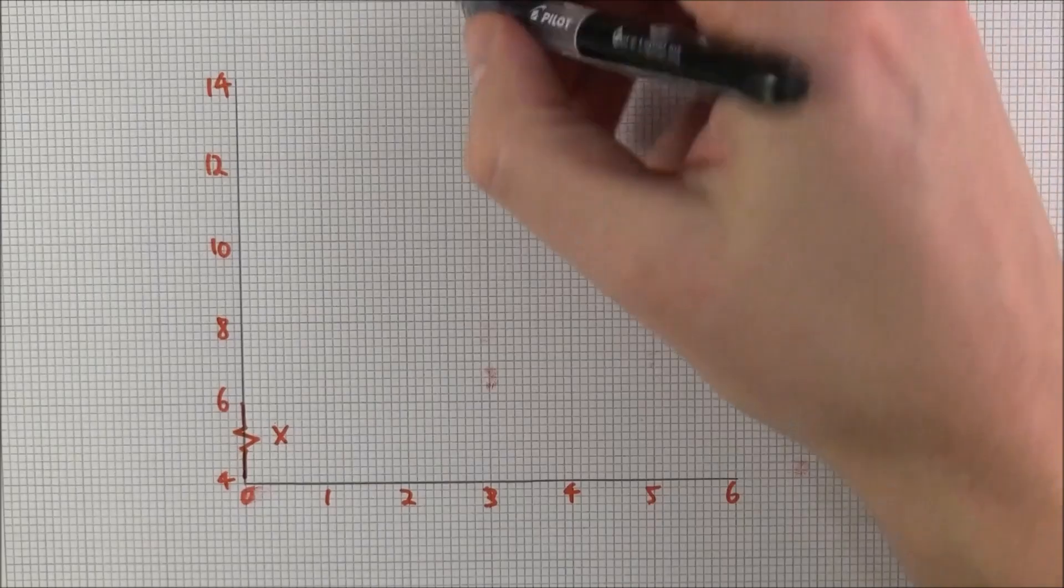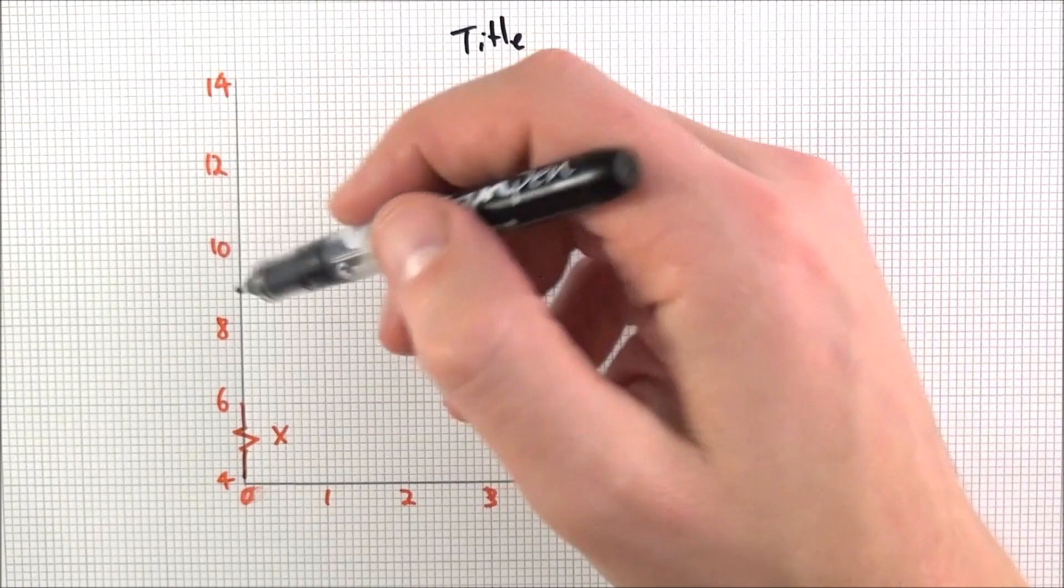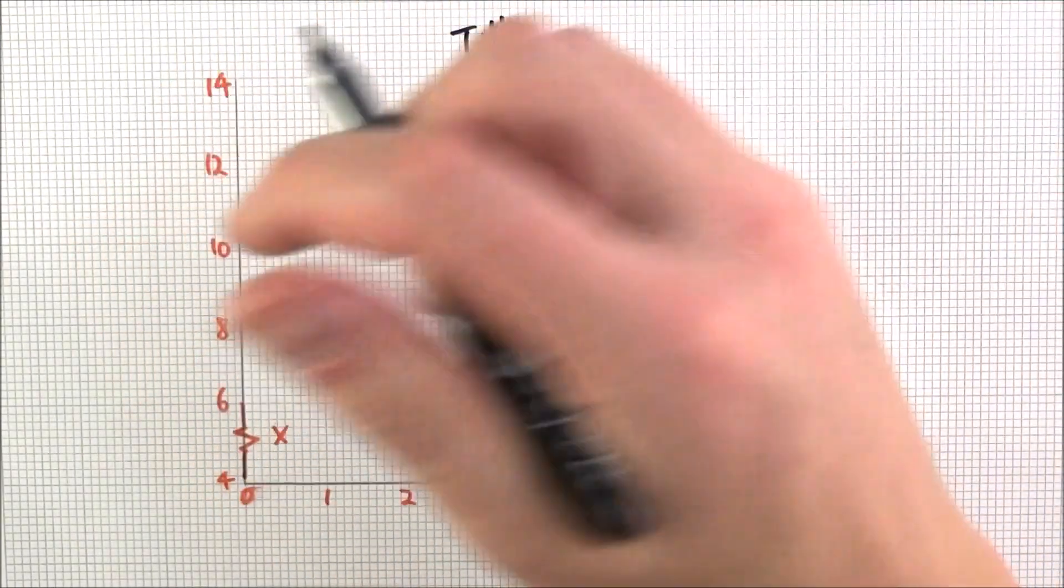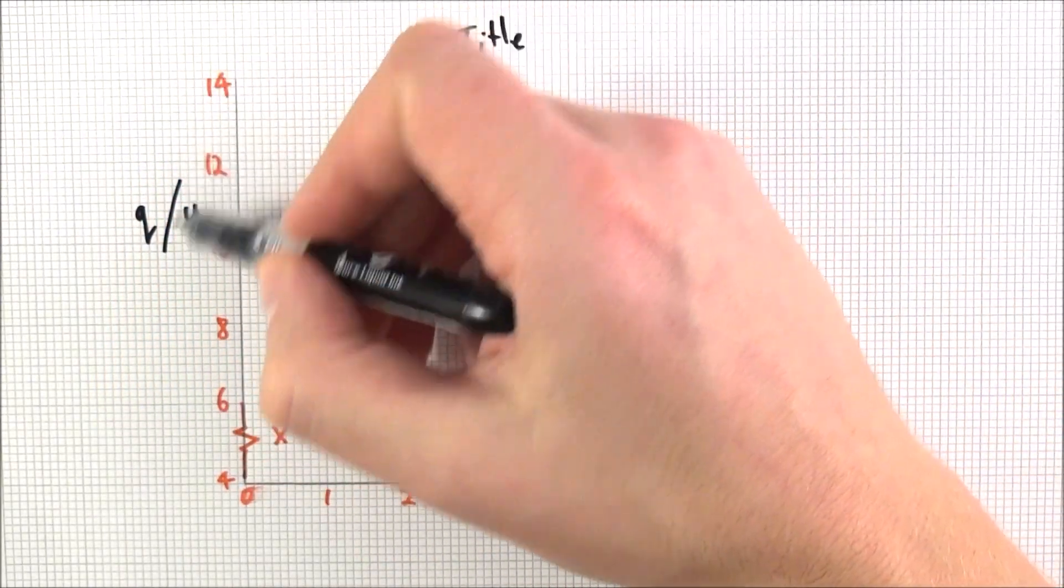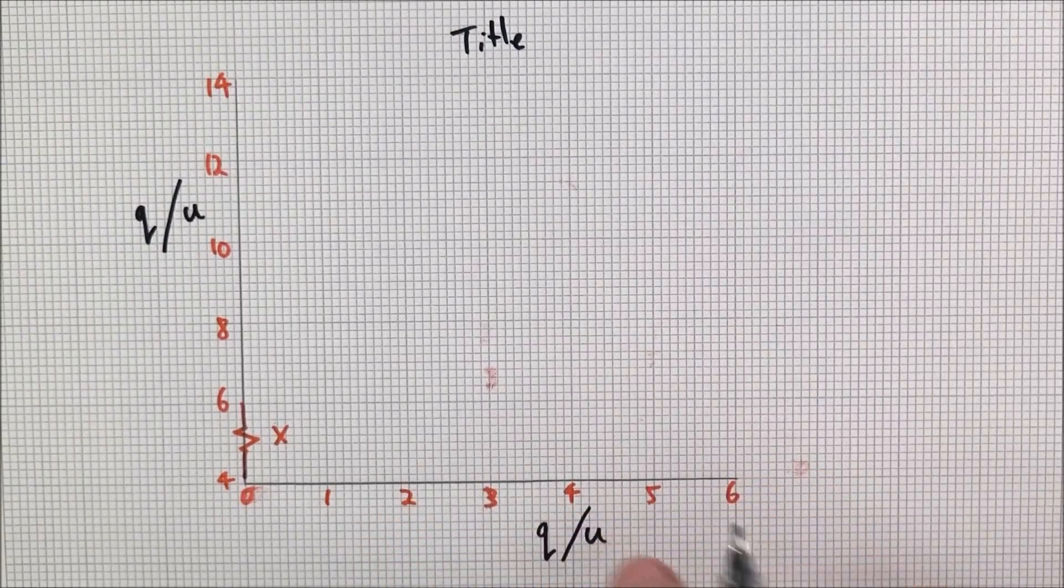You also need to maybe put down a title just so that people know what the graph is about. Very much maybe x plotted against y. You also need to label your axes, and on each axis what you need is both the quantity and also the unit, separated with one of these slashes, and again the quantity and the unit on both the axes.